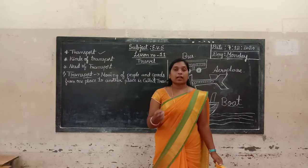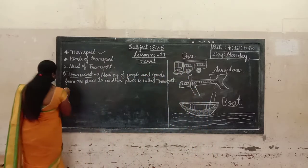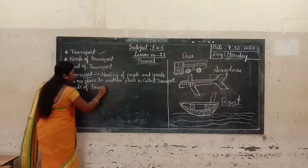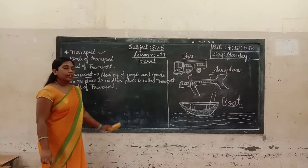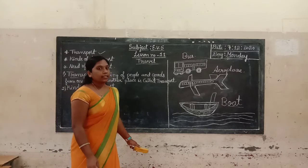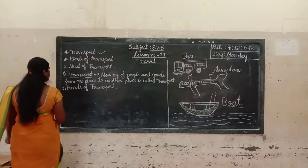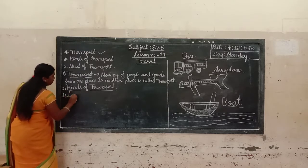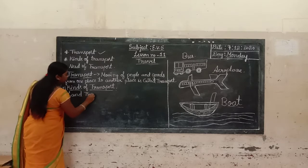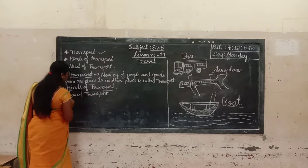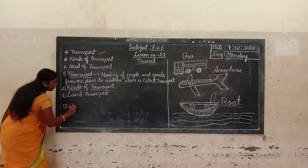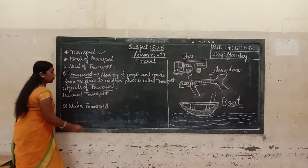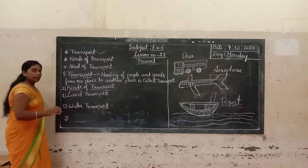Now let us learn the kinds of transport. There are mainly three types of transport. The first one is land transport. The second one is water transport. And the third one is air transport.